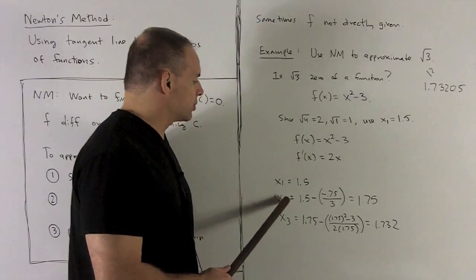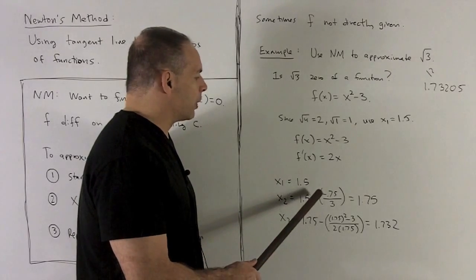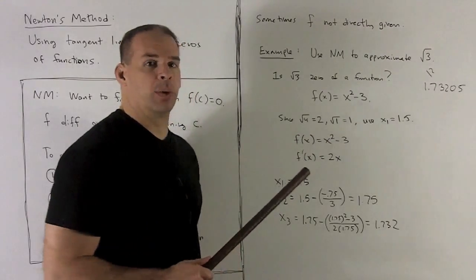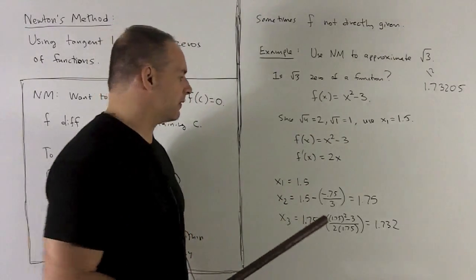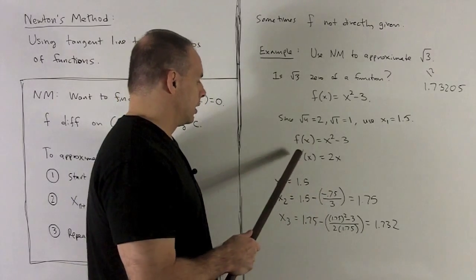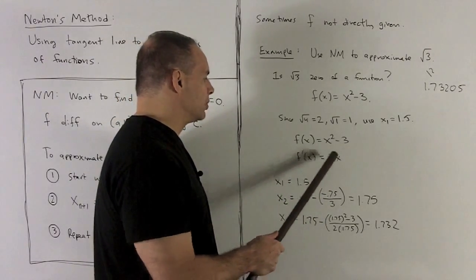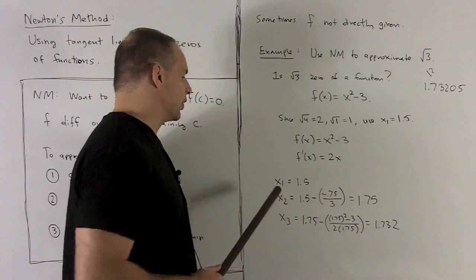x1 is 1.5. x2 is going to be, just take x1, 1.5. Subtract off what I get when I put 1.5 into f. 1.5 squared is 2.25. We subtract 3, which gives me minus 0.75. Then we're going to divide by f prime at 1.5, which is just going to be 3. And so my answer is going to be 1.75 for x2.